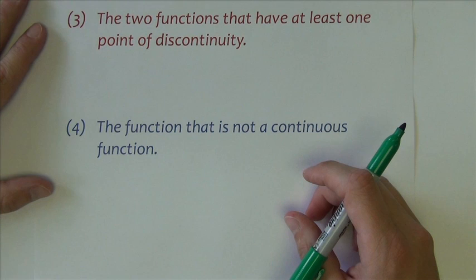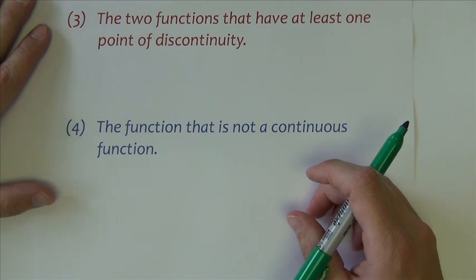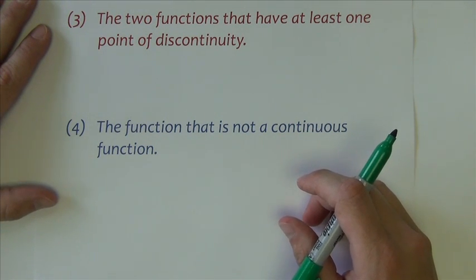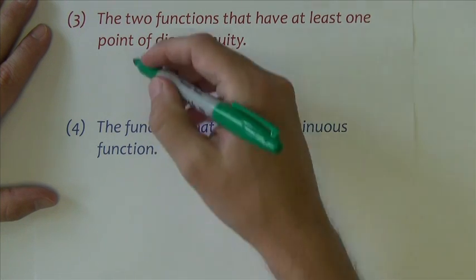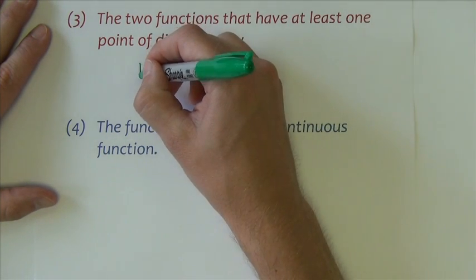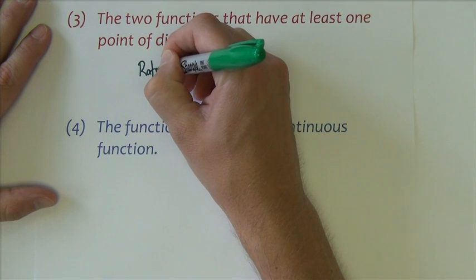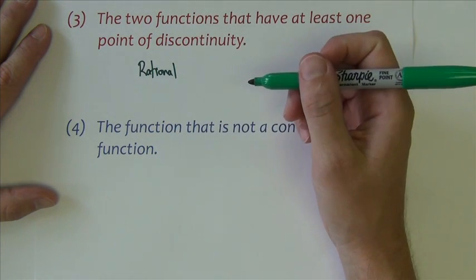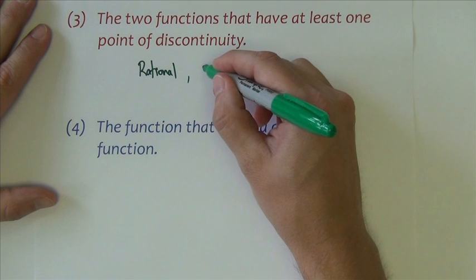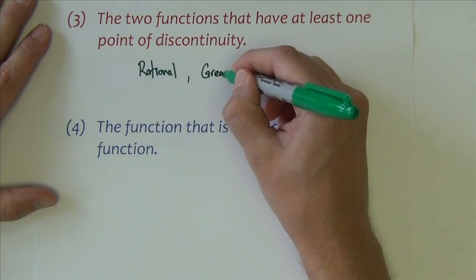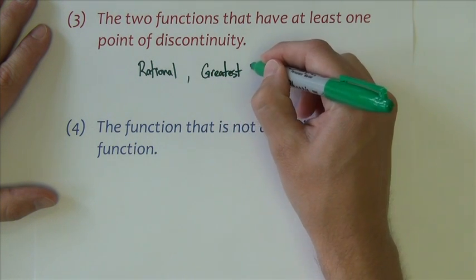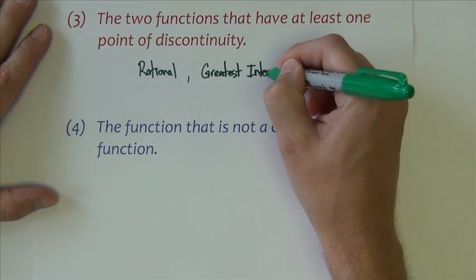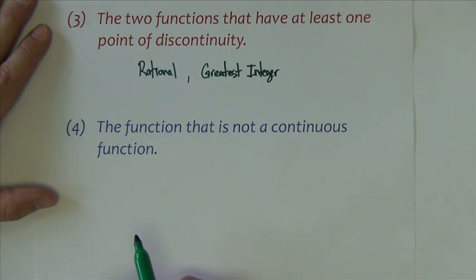Number three, the two functions that have at least one point of discontinuity. Well, one would be the rational or reciprocal function. Another would be, of course, the greatest integer function. And that's it. I've got two, so I think it's those two.